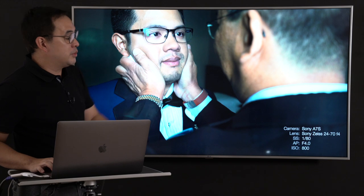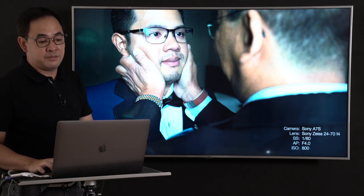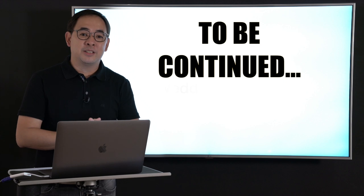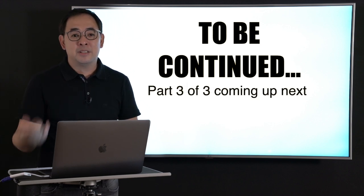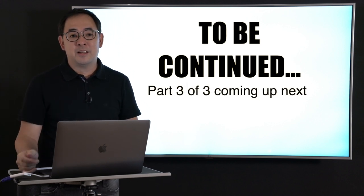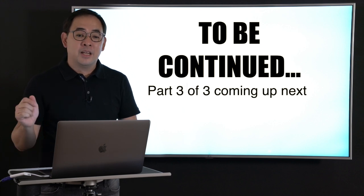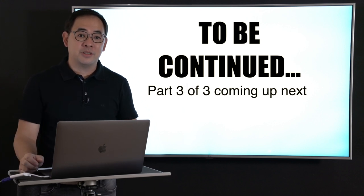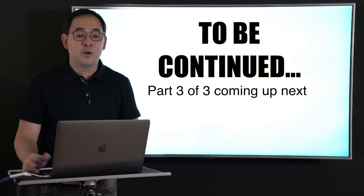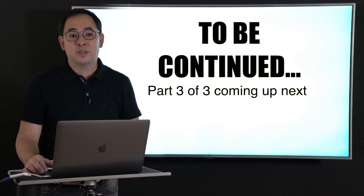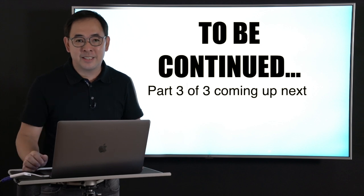That emotional family shot was taken with a Sony A7S and a 24-70mm F4. I hope you guys enjoyed the video. If you liked it, please subscribe to the channel and click the notification bell. If you want to see more of my photos, find me at Jiggy Alejandrino on Instagram or Facebook. Watch out for the next video.